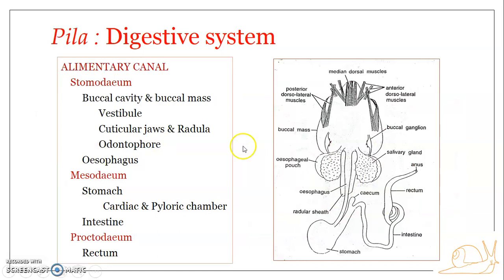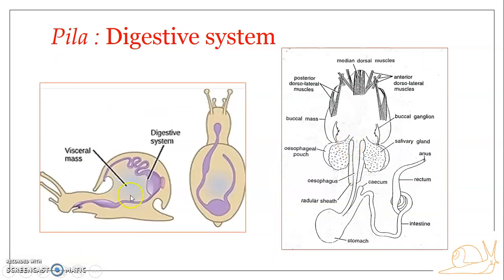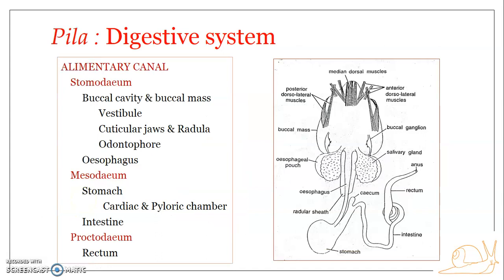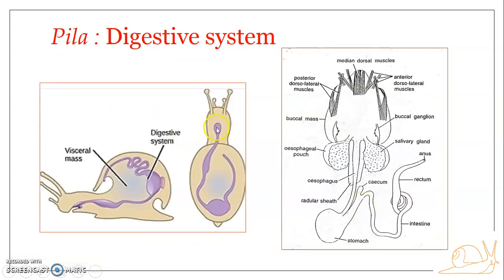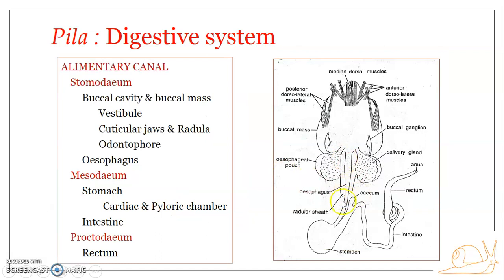Coming to the esophagus — the next part. The esophagus is a narrow, long tube which emerges dorsally from the buccal mass. It runs a short distance, then turns to the left and enters the visceral mass. The esophagus later opens into the stomach.